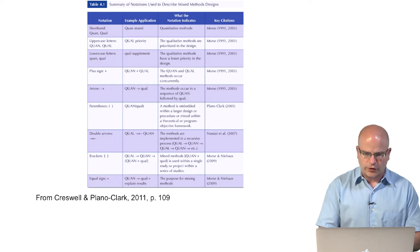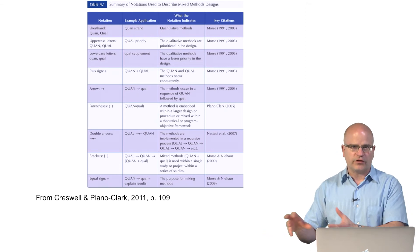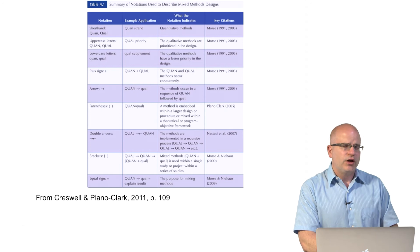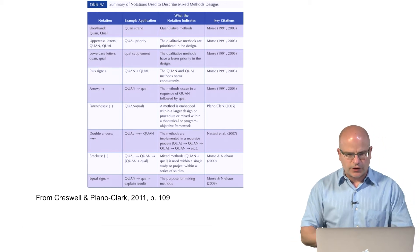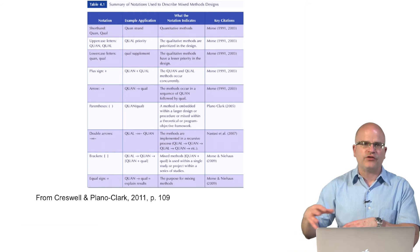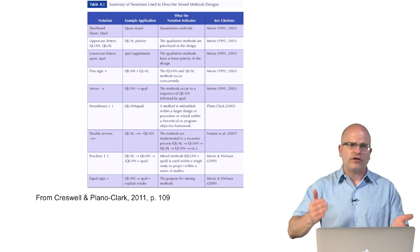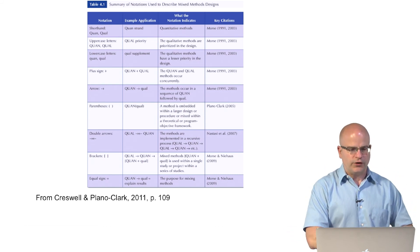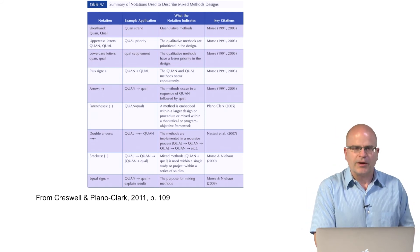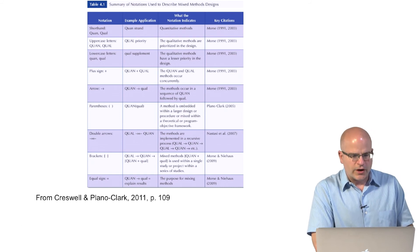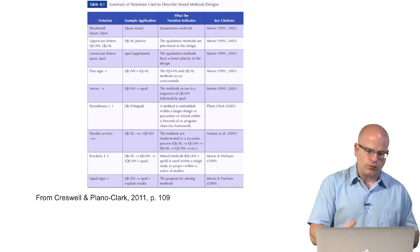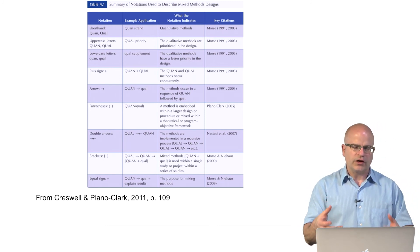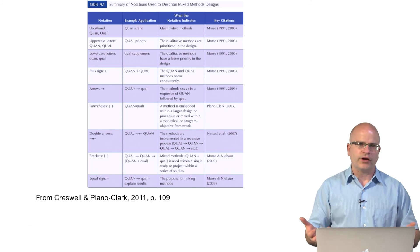Double arrows indicate methods are implemented in a recursive process, where one goes back and forth between qualitative and quantitative elements within a study design — a more complex but less common approach. Brackets indicate multi-phase types of studies, where mixed methods is used within a single project across a series of studies — for example, large-scale program evaluations with multiple phases, each using mixed methods. Finally, an equal sign denotes the purpose for mixing methods. For example, a sequential design with a quantitative strand followed by a qualitative strand, where the purpose is to better explain the quantitative results using qualitative inquiry.